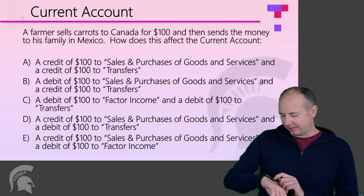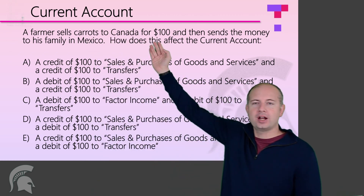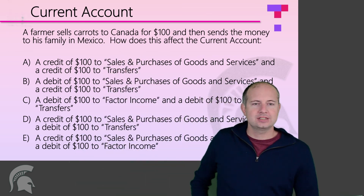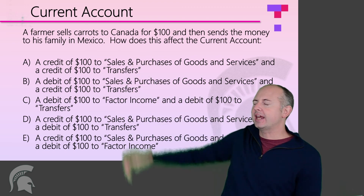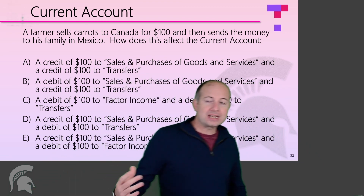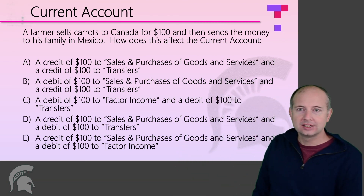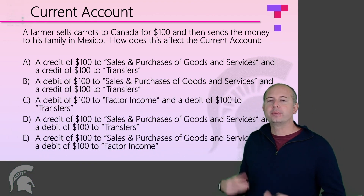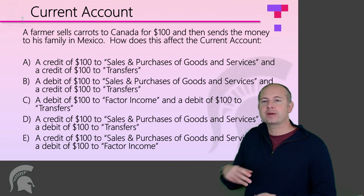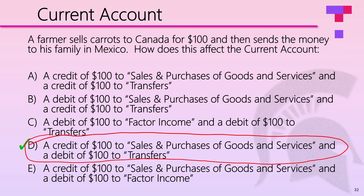For example: a family sells carrots to Canada for $100 and then sends the money to his family in Mexico. First, he sells goods to Canada — that's a sale of goods and services, so money goes to the United States: a credit to sales and purchases of goods. Then he sends the money to his family in Mexico — that's a remittance, a debit in the transfers part. So: a credit of $100 to goods/services, and a debit of $100 to transfers.